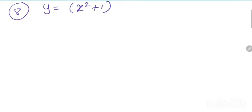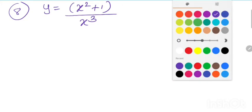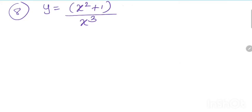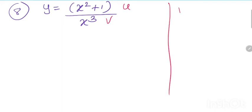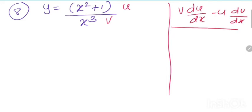Problem number 8: y is equal to x square plus 1 divided by x cube. Here u is x square plus 1 and v is x cube. We will use the formula v du upon dx minus u dv upon dx divided by v square.